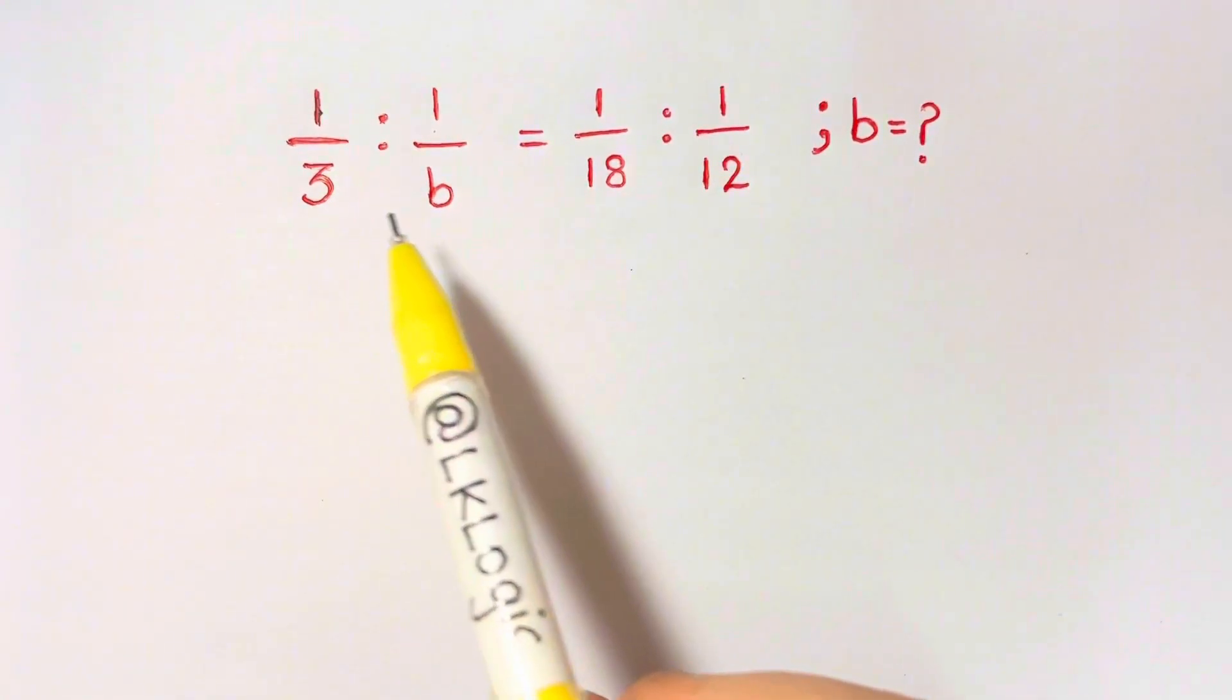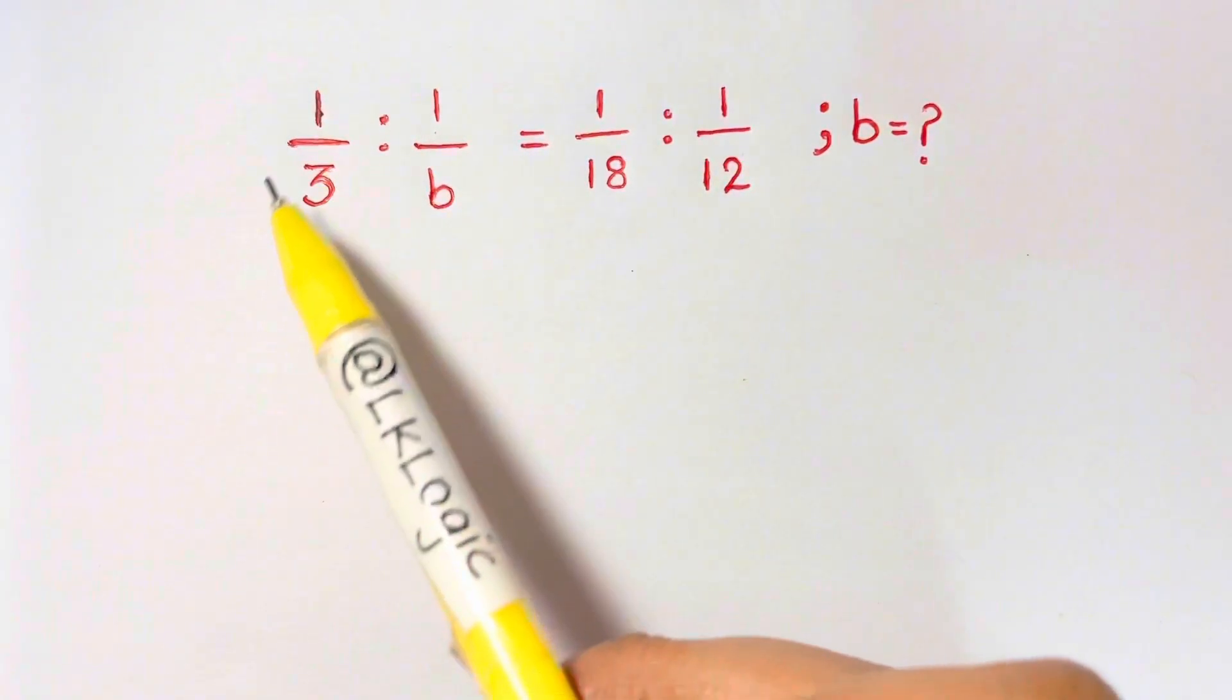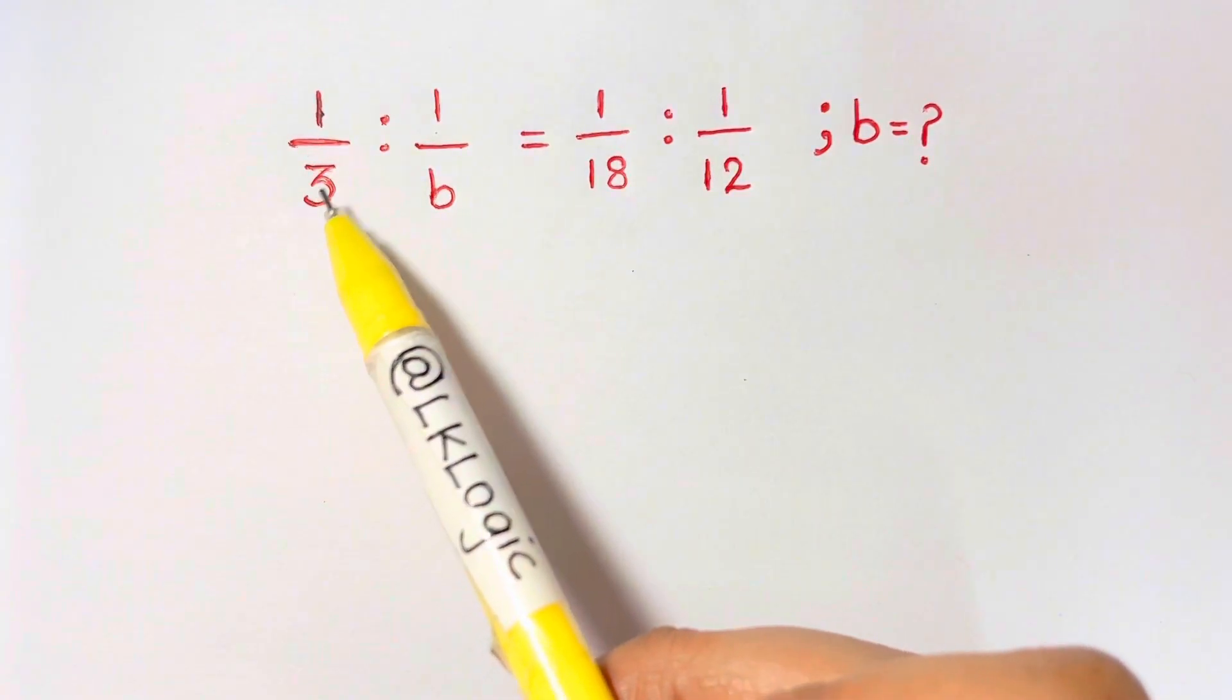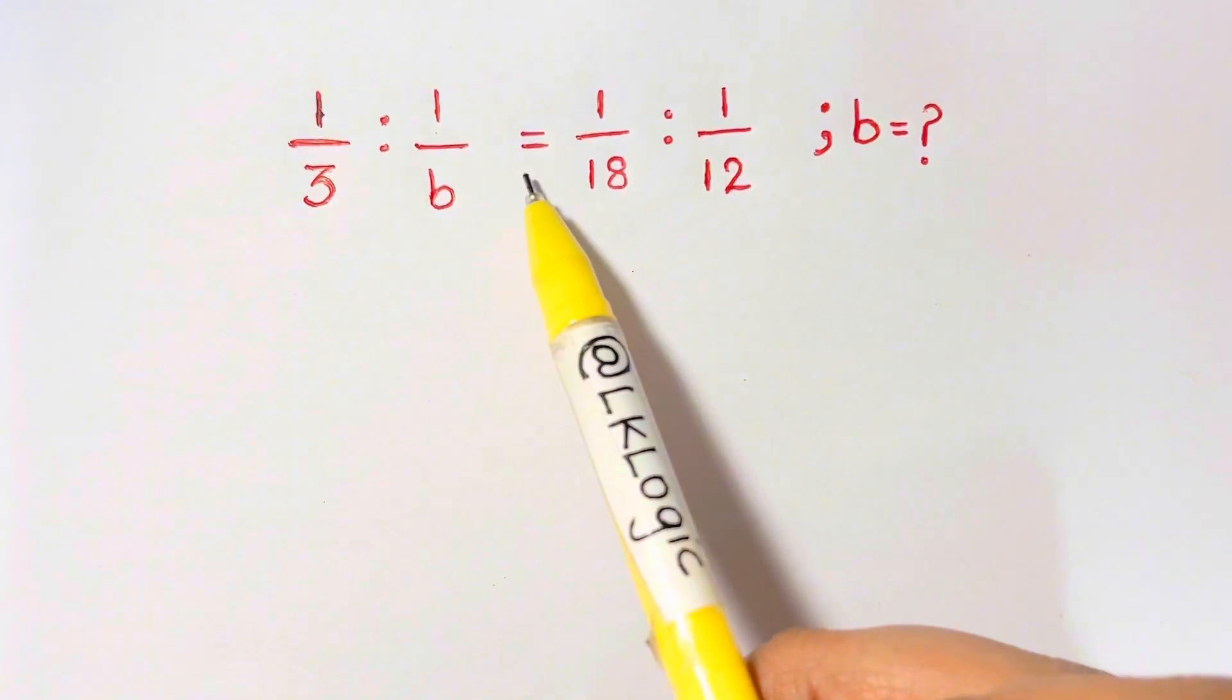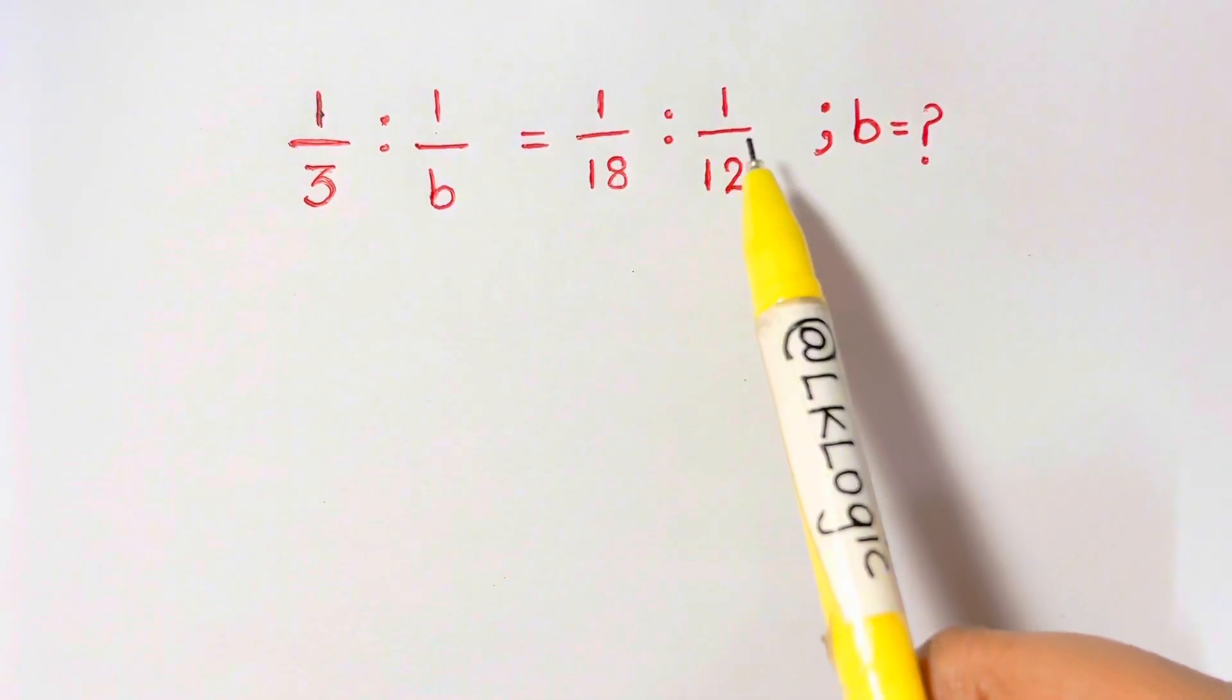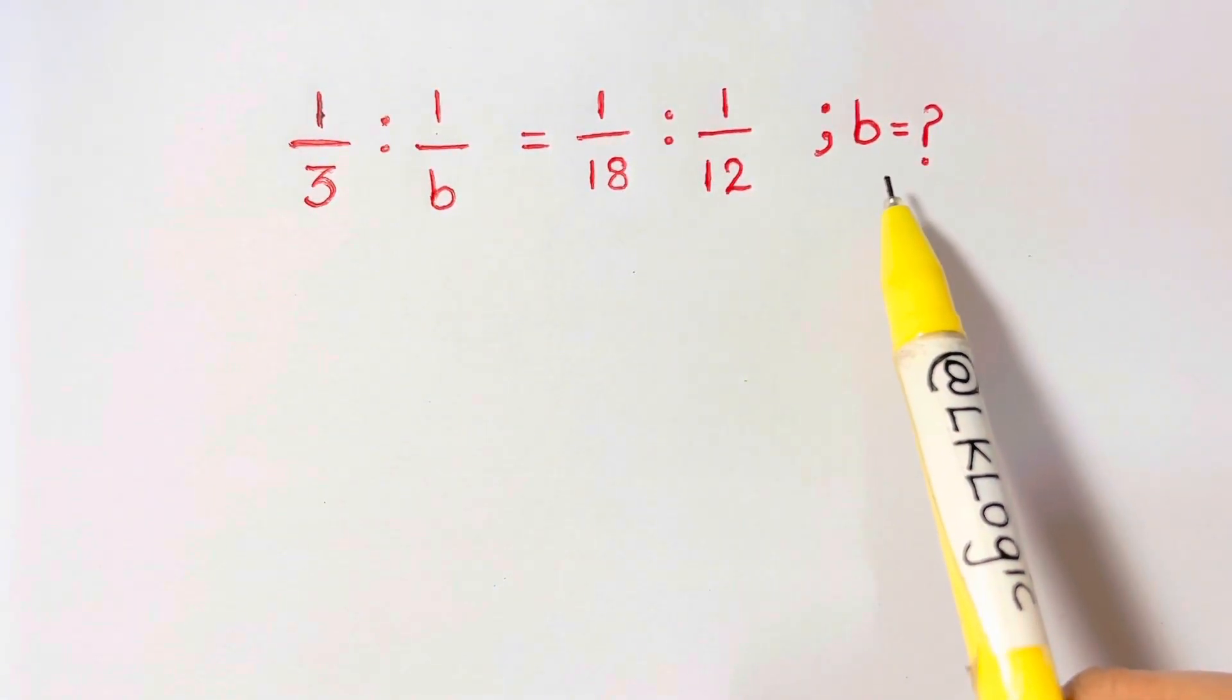Hi guys, I have a nice ratio problem for you all. It says if the ratio of 1 over 3 is to 1 over B equals 1 over 18 is to 1 over 12, then what is the value of B?